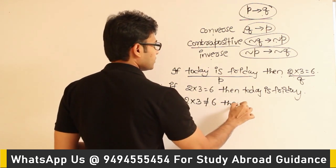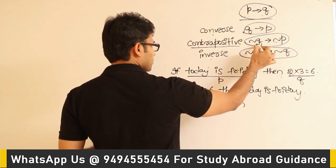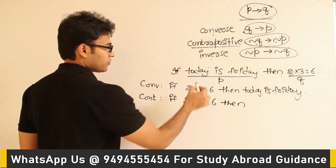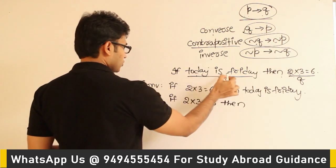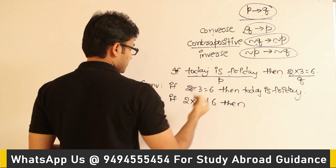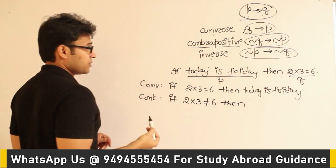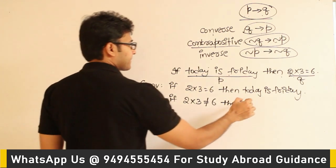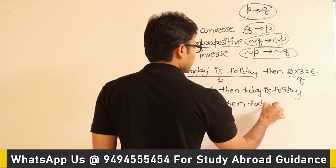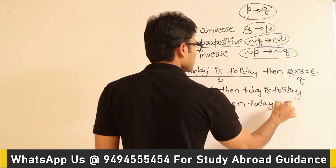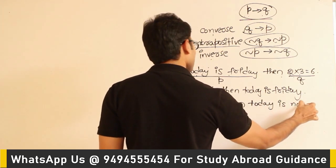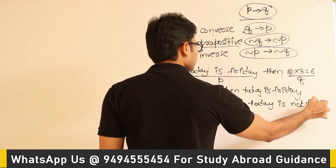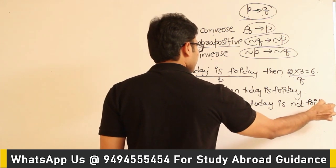Negation of Q implies negation of P. What is negation of P? Today is Friday is P, so negation of P is: today is not Friday. So the contrapositive is: if 2 into 3 is not equal to 6, then today is not Friday.